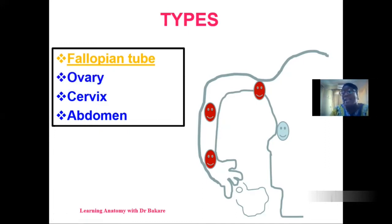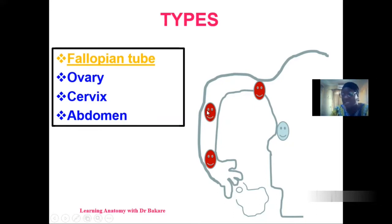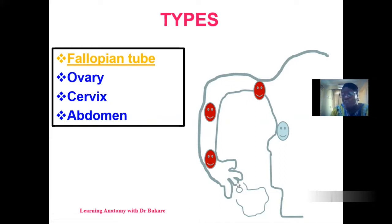The next type of ectopic pregnancy is implantation in the ovary. The ovary is the structure that produces the egg; after release, the egg moves to the ampulla region where fertilization takes place. After fertilization, there could be a redirection where the fertilized egg moves more distally and gets implanted in the ovary — this is also a form of ectopic pregnancy.